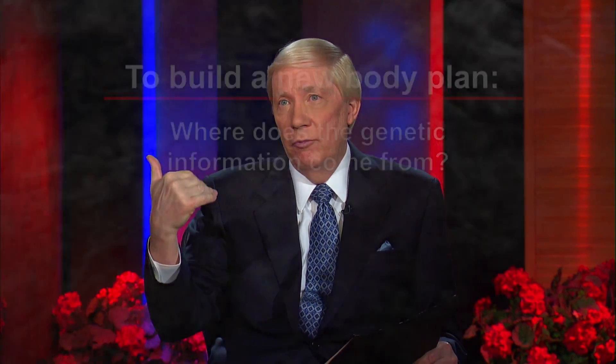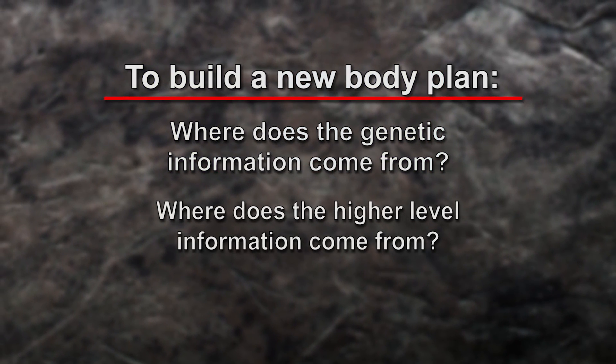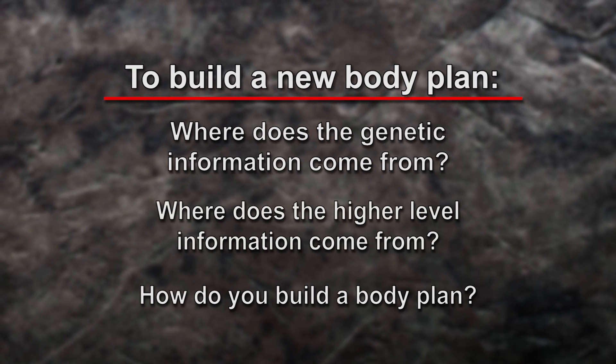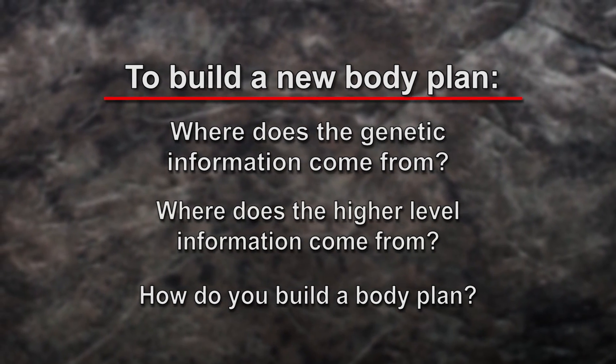It raises the question: if you have all of these animals showing up in the Cambrian fossil record, where did it come from? Where does the genetic information come from? Where does the higher-level information come from? And how do you build a body plan? None of these problems have been answered by modern Darwinian theory, and so we clearly need a new theory.